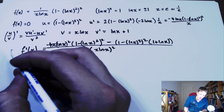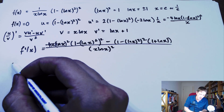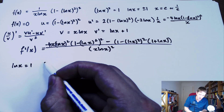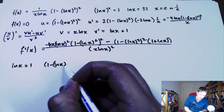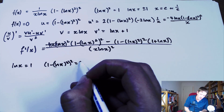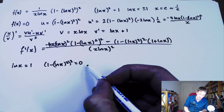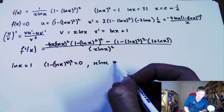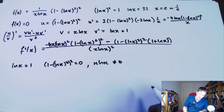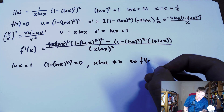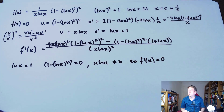So that's v·u' minus u·v', giving (1 − log²x)²·(1 + log x) in the numerator, all over v² = (x·log x)². We know that when log x = ±1, the factor (1 − log²x)² = 0, which appears in both numerator terms, and x·log x ≠ 0 in the denominator, so f'(x) = 0.